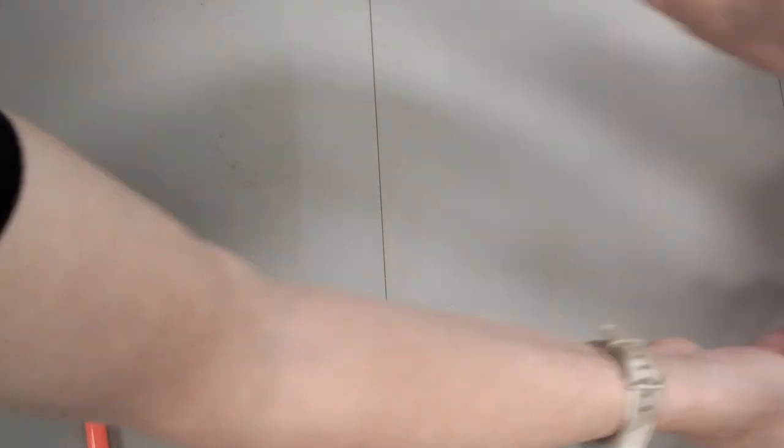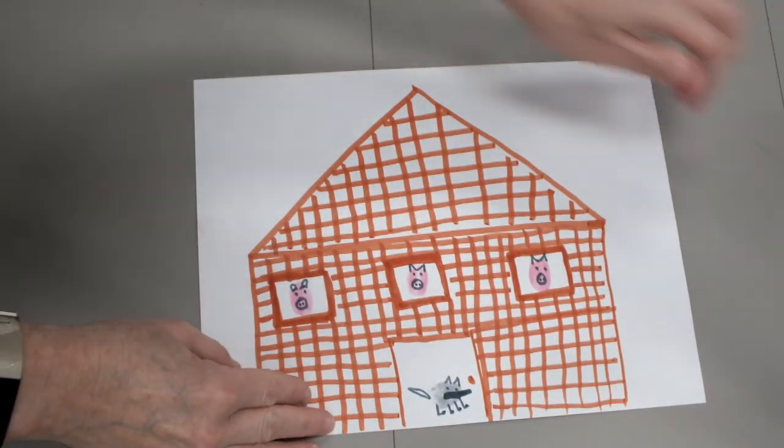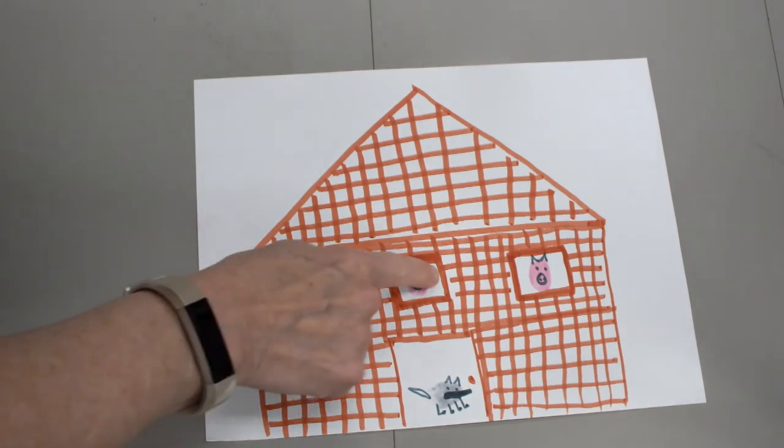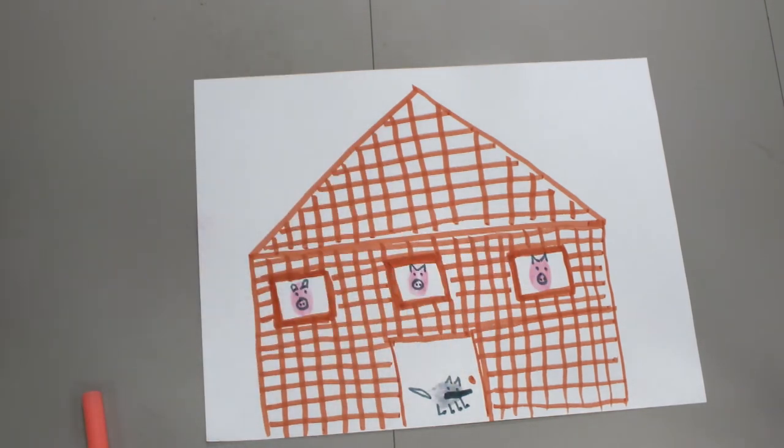Now the third brother had built his house out of bricks. And bricks are very sturdy when you build your house out of it. So the two little pigs ran to the brother's house that was built of sticks and they said let us in, let us in, the wolf is chasing us. So they did just in the nick of time, shut the door and now there are three little pigs in the brick house.